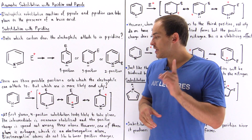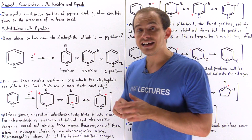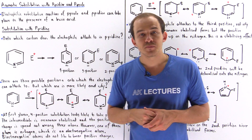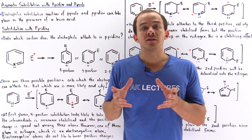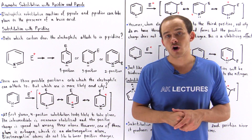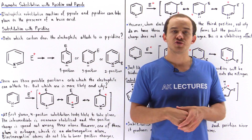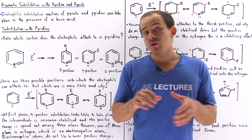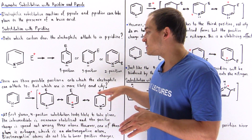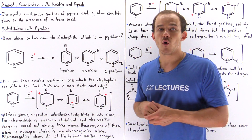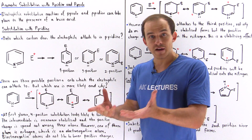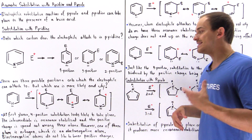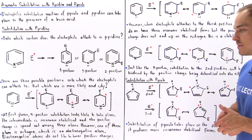But one thing we must notice is the fact that nitrogen is a very electronegative atom. Electronegative atoms do not like to bear positive charge, and whenever they do have a positive charge, that creates a destabilizing effect. So even though we have three resonance-stabilized forms, in one of these forms the positive charge is found on the electronegative nitrogen atom, and that is a destabilizing phenomenon.